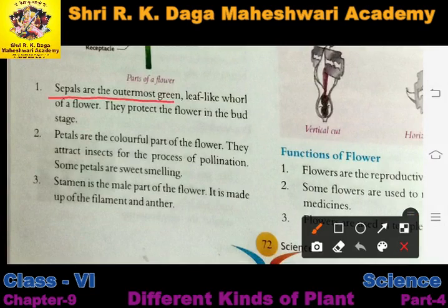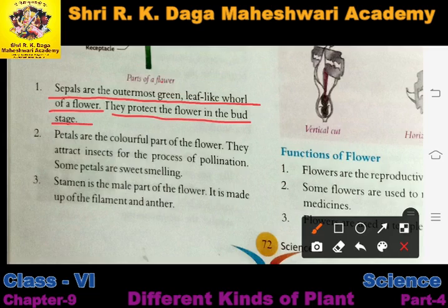Sepals are the outermost green leaf-like part of a flower. They protect the flower in the bud stage. The sepals are the outermost green part of the flower — a leaf-like wall of the flower.